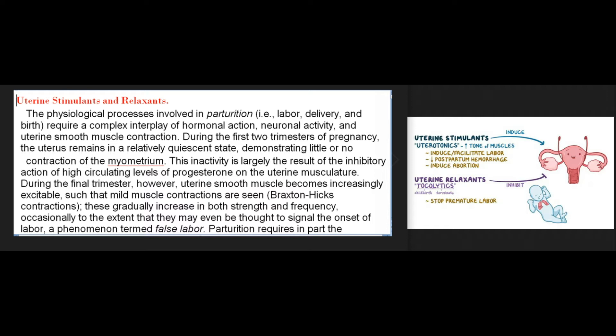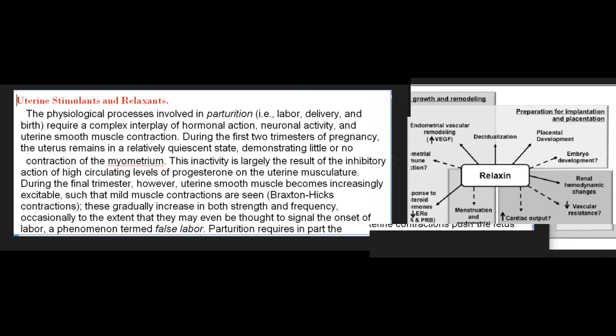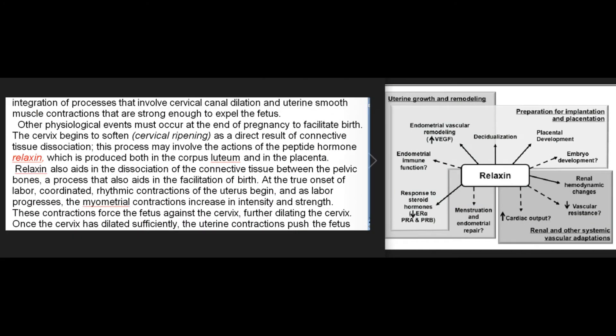During the final trimester, however, uterine smooth muscle becomes increasingly excitable, such that mild muscle contractions — Braxton Hicks contractions — are seen. These gradually increase in both strength and frequency, occasionally to the extent that they may even be thought to signal the onset of labor, a phenomenon termed false labor. Parturition requires, in part, the integration of processes that involve cervical canal dilation and uterine smooth muscle contractions strong enough to expel the fetus. Other physiological events must occur at the end of pregnancy to facilitate birth.